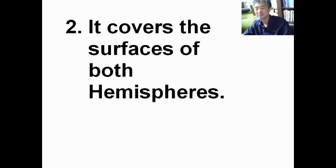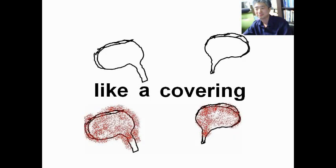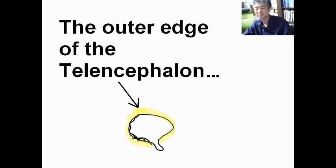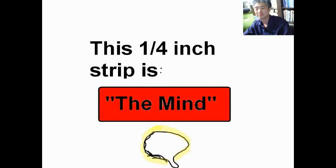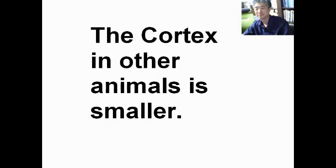It covers the surfaces of both hemispheres, like covering the outer edge of the telencephalon, like this. The outer cortex of the telencephalon is called the cortex. This cortex strip is the mind. The cortex in other animals is smaller.